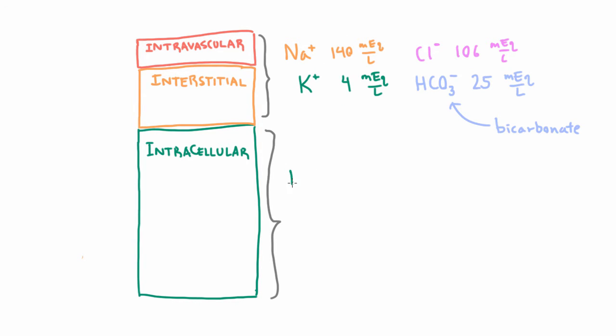So in the intracellular compartment, you might have about 140 milliequivalents per liter of potassium, and then only about 14 milliequivalents per liter of sodium.